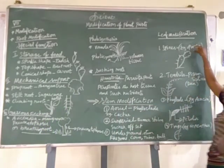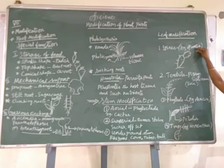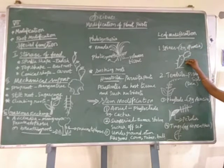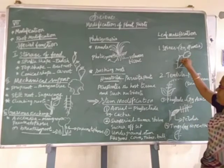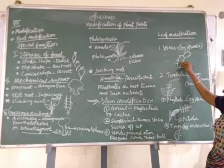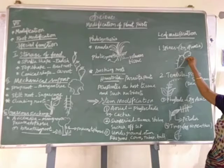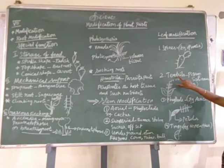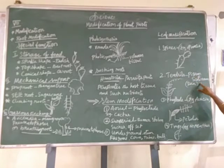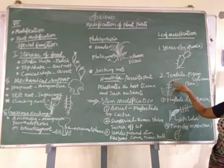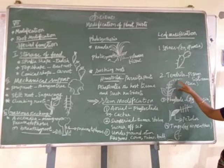Next, leaf modification. Spines — example for opuntia. The leaves are modified into spines, covering a very small area. The stem is modified into the leaf function, called phylloclade. Next, tendrils — example for pea plants. The leaf tips are modified into tendrils for supporting the plants.